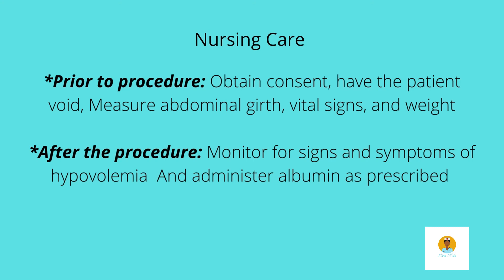We always measure the patient's vital signs, weight, and abdominal girth circumference before and after the procedure to see how much fluid was removed. There is also a risk of fluid shift, so we monitor the patient for hypovolemia since we are removing fluid. The peritoneal fluid is high in protein, which can cause a fluid shift in the body, so albumin — a volume expander and protein — is typically administered as prescribed by the doctor.